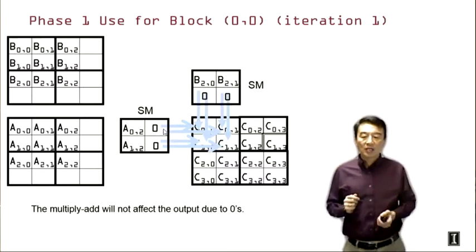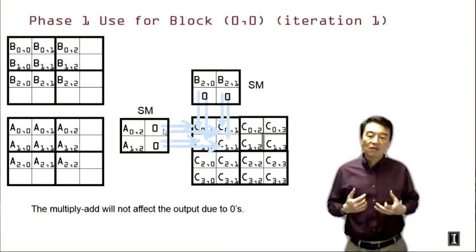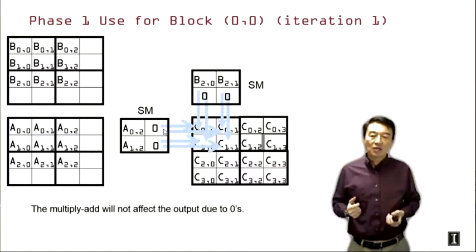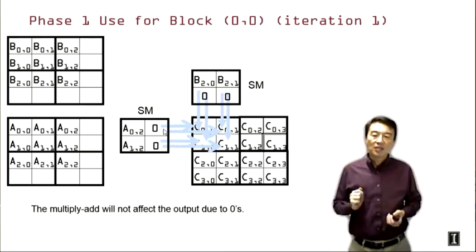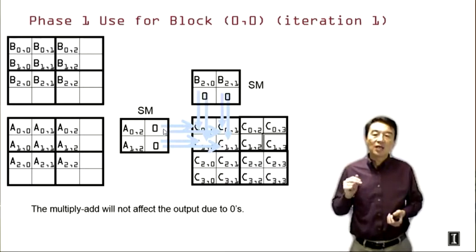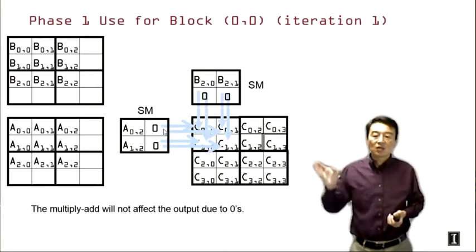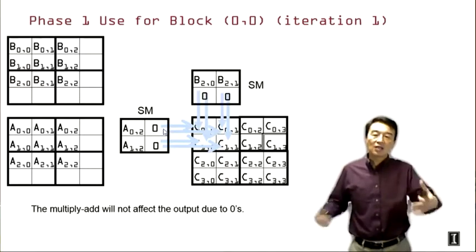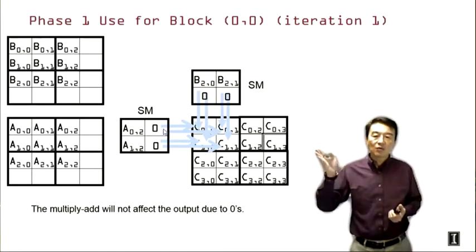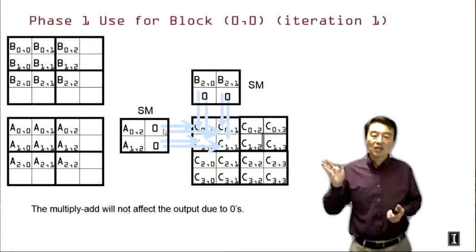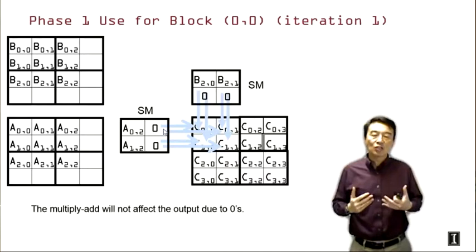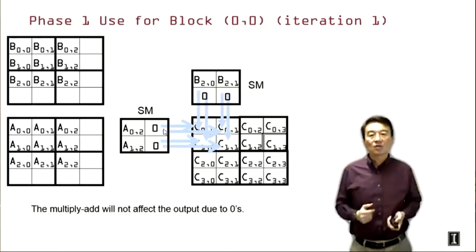Here we show a simple case for phase one use of 0.0. Recall that we have two invalid elements of B and two invalid elements of A. But here, as long as we test for every thread whether it's loading an element in the valid range or not, we will end up assigning zeros to all these four locations rather than loading garbage values. So in iteration one, we're going to produce zero value products and accumulate zero into the final dot value, which does not change the dot product value. Therefore, we preserve the correctness of the dot product.